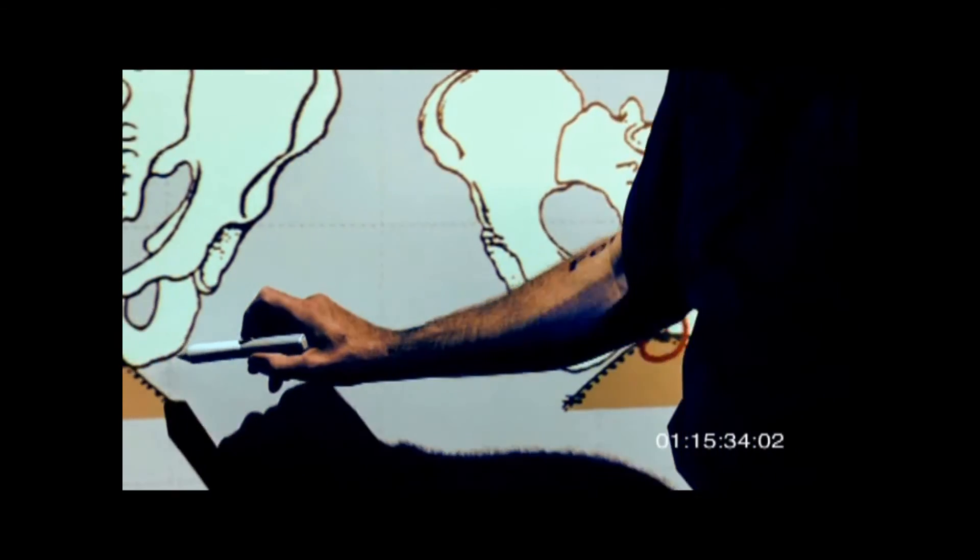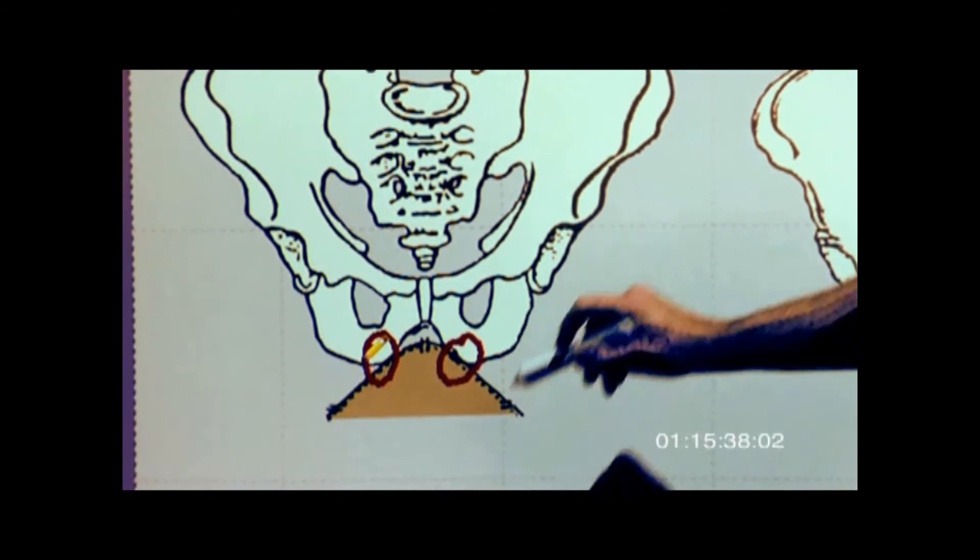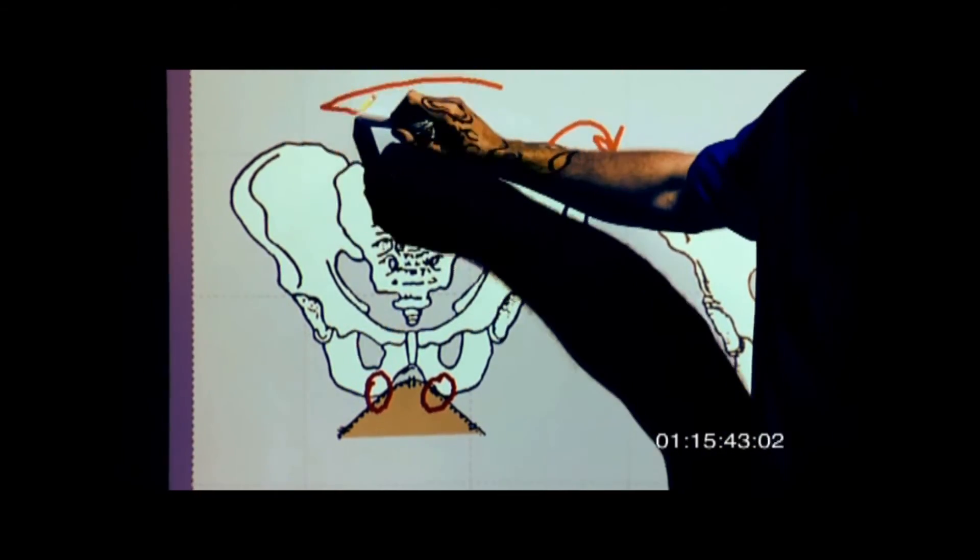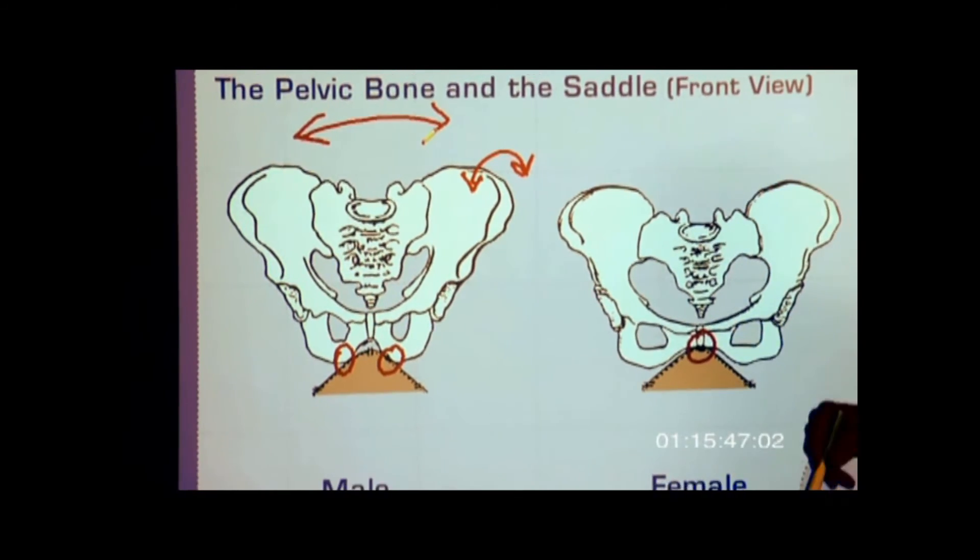If you're sitting on your seat bones, you can easily pivot your pelvis back and forth or left and right and give the proper aids to the horse and you're in balance.